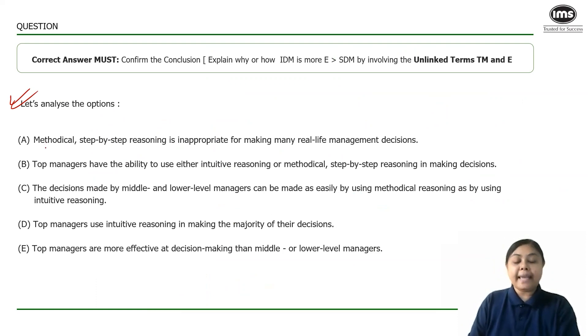The first option A says methodical step-by-step reasoning is inappropriate for making many real-life management decisions. I'm giving a negative about methodical step-by-step reasoning. But does that tell me something why IDM is more effective? Does that talk about IDM? Is there anything about IDM in this particular option? No. Also, it does not take into account my unlinked terms, top managers and effectiveness. I really don't know how IDM is more effective. I can safely remove option A.